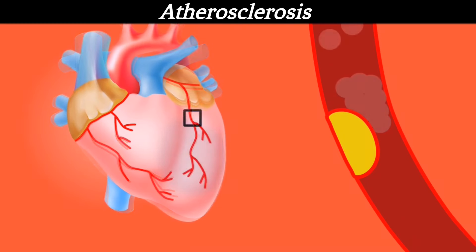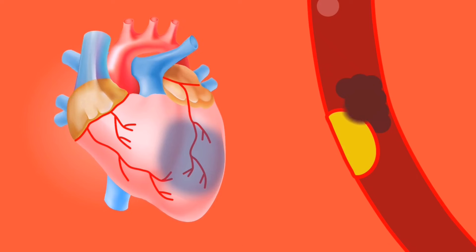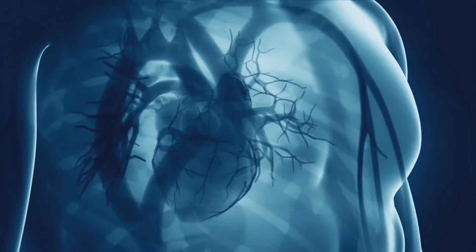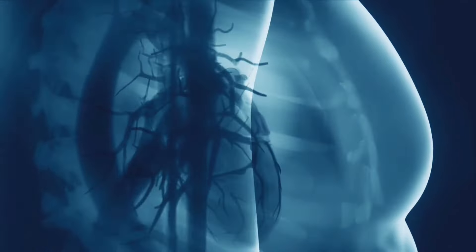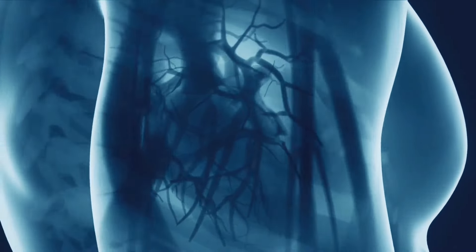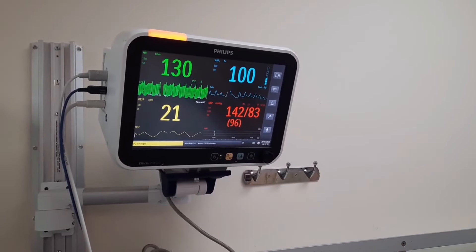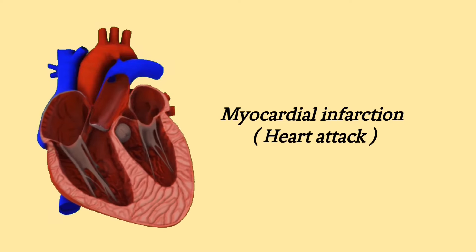If the plaque ruptures or tears, the emergency repair system of the body causes a blood clot or platelet to form around it. This reduces the blood flow to the heart. Within a short period, muscle cells in the heart begin to die. The normal rhythm of the heart starts declining over time. This is known as a heart attack or myocardial infarction.